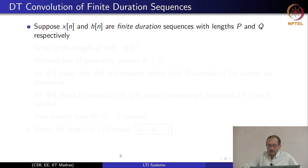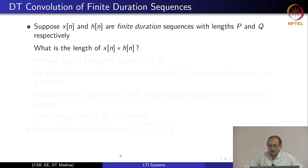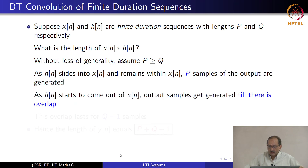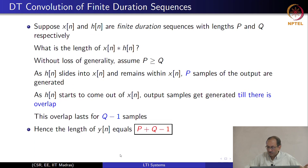If there are two sequences x of n and h of n which are of finite duration, and their lengths are p and q, then the length of the convolution of these two sequences is easily determined. Without loss of generality, you can assume p is greater than or equal to q. As h of n slides into x of n and remains within x of n, p samples of the output are generated. As h of n starts to come out of x of n, the overlap lasts for q minus 1 samples. Therefore, the total length is p plus q minus 1.